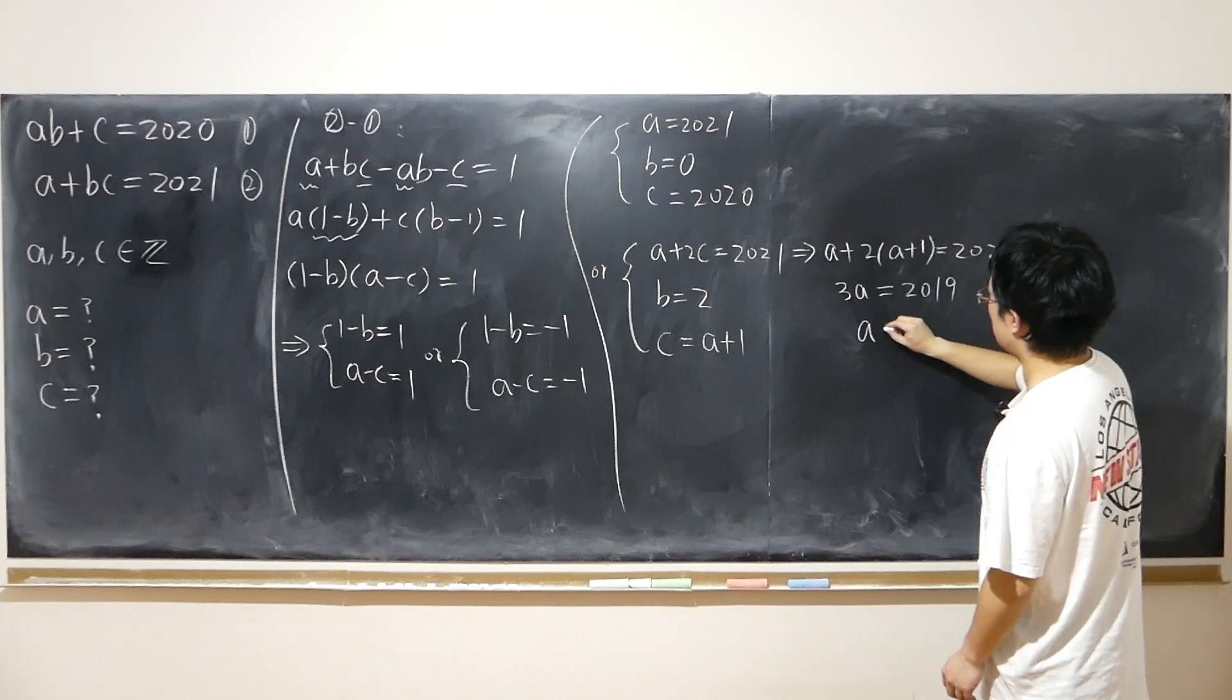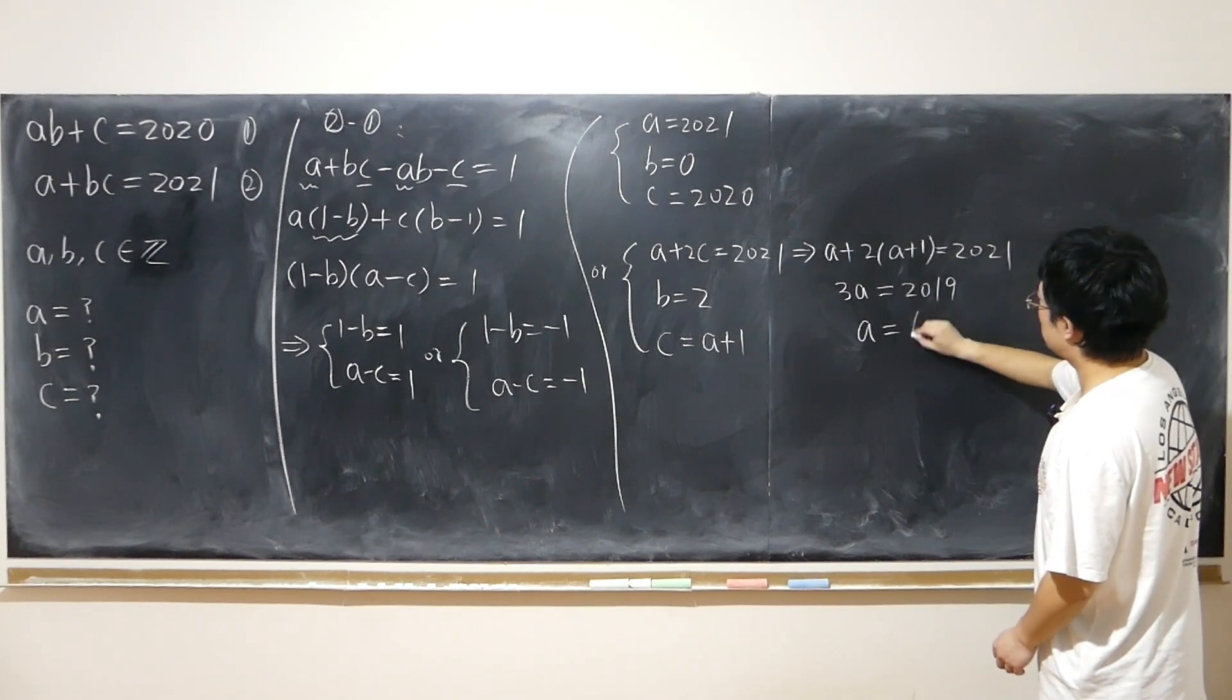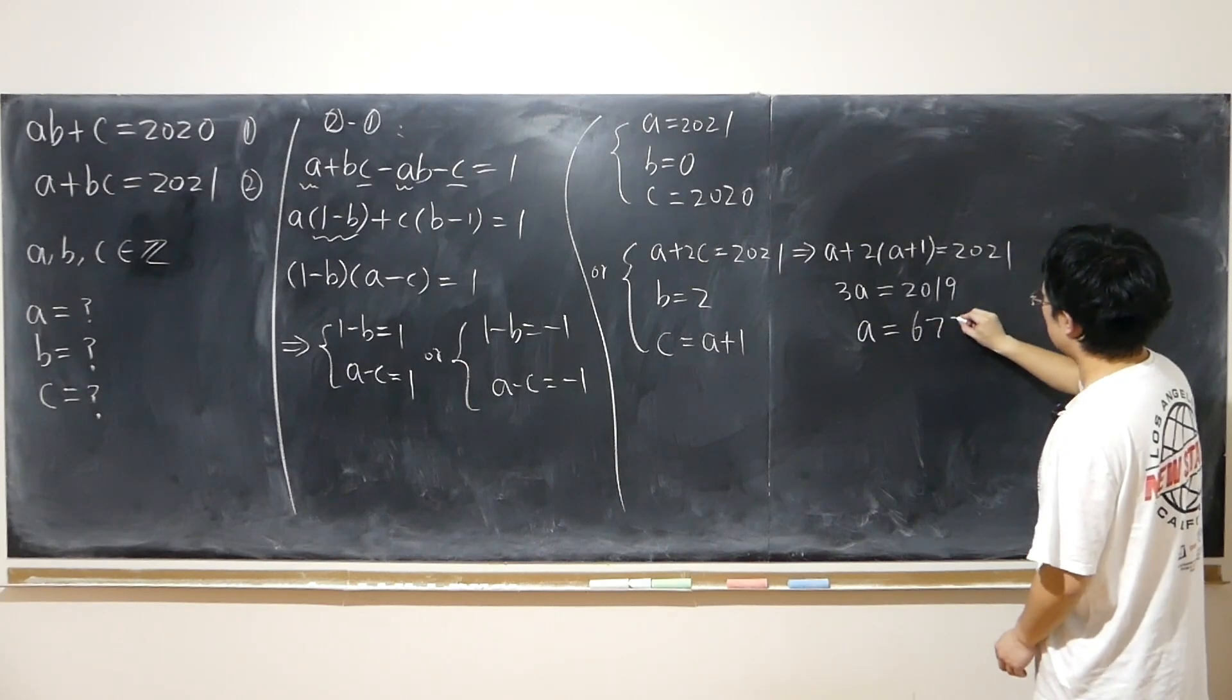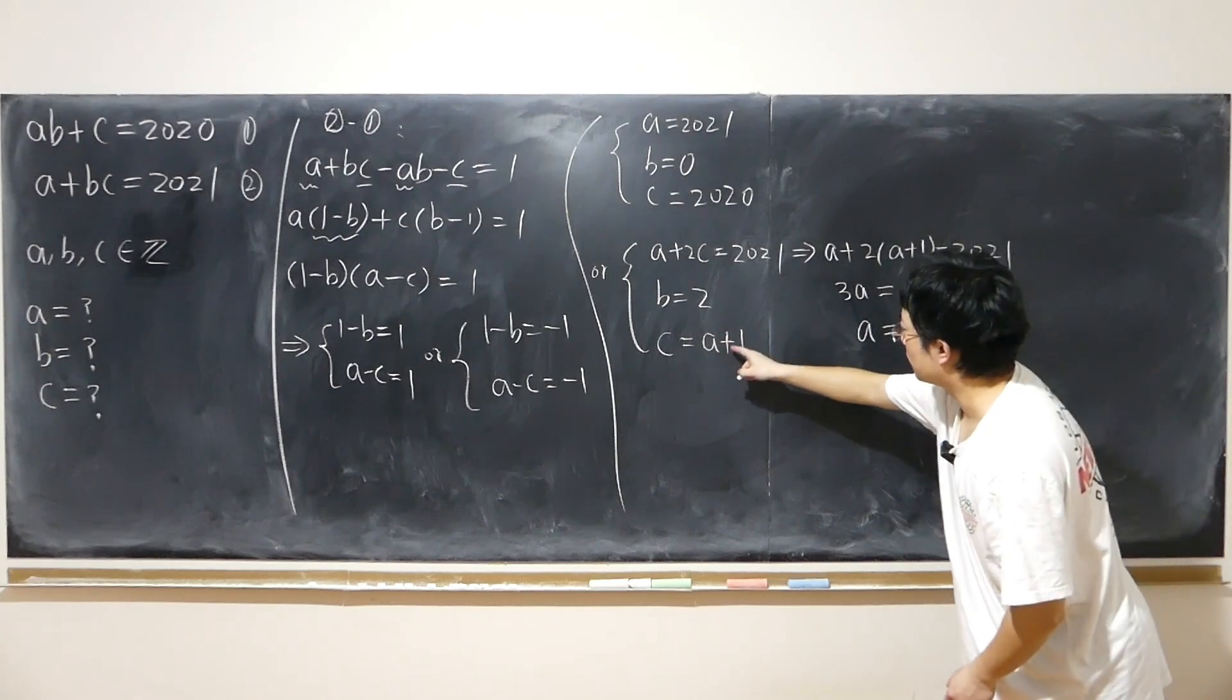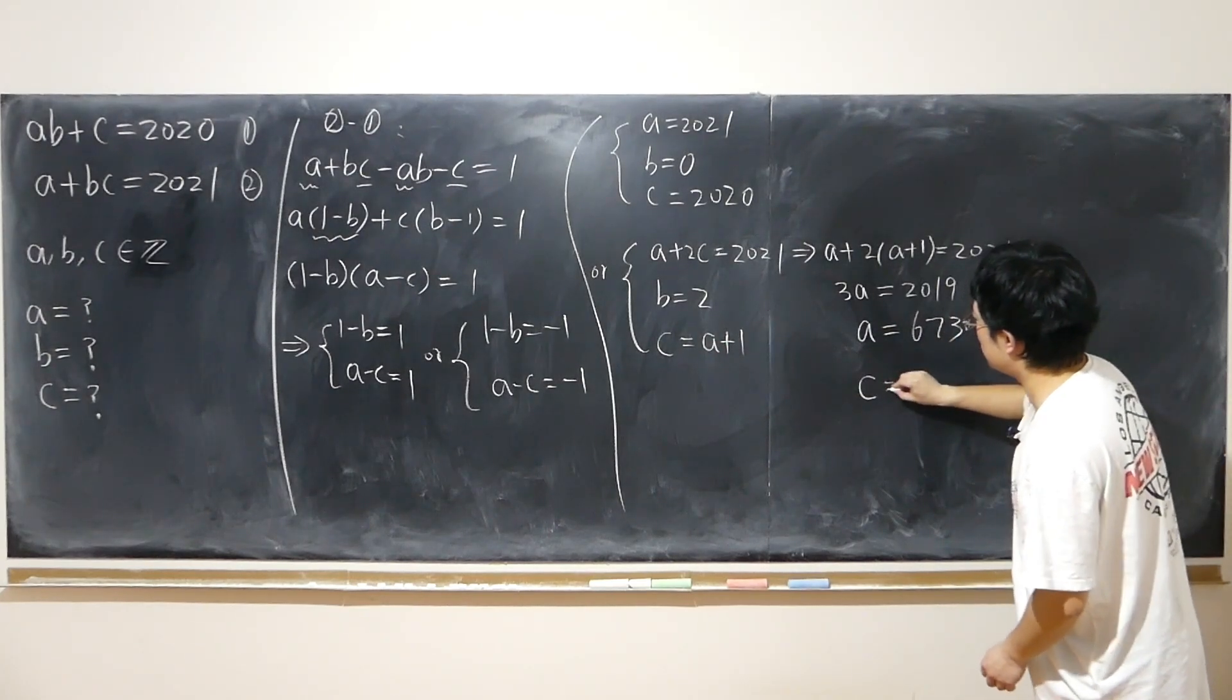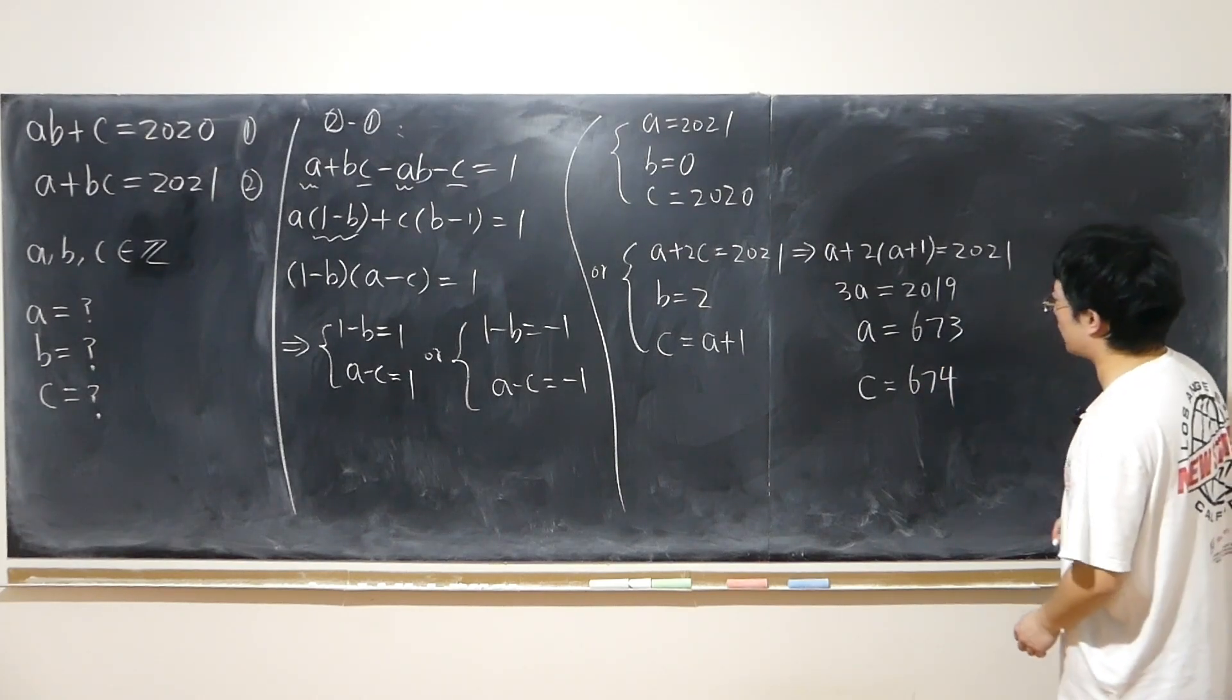So in this case, a is equal to 673, right? And also, following this equation, I have c is equal to a plus 1. That's 674, like I said. So this way, calculation is a little easier.